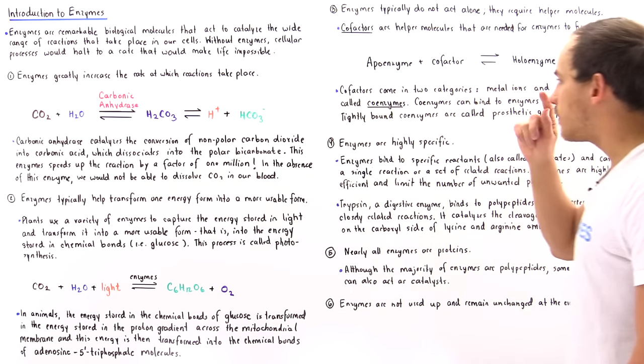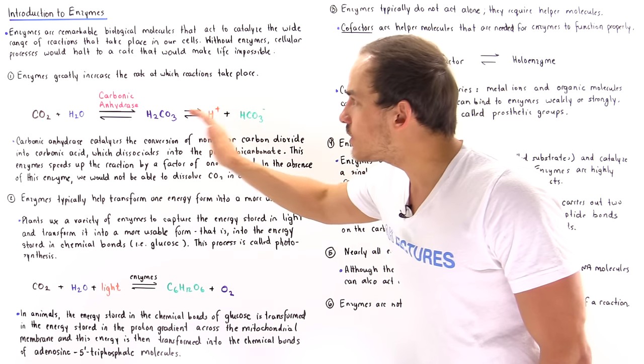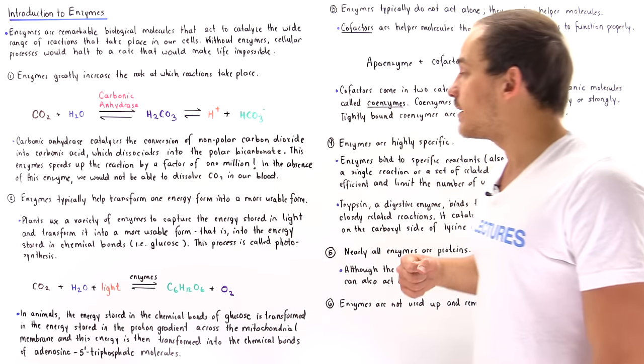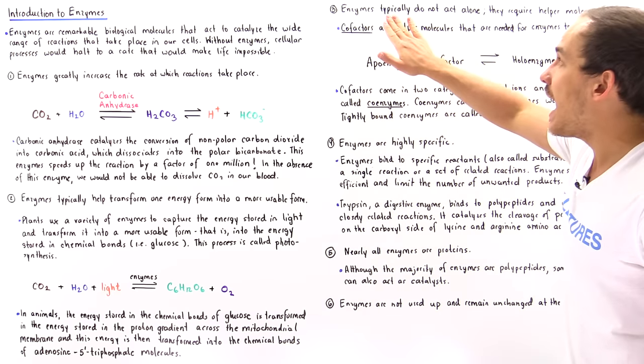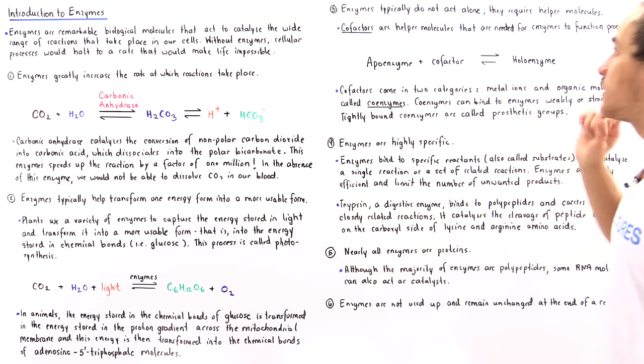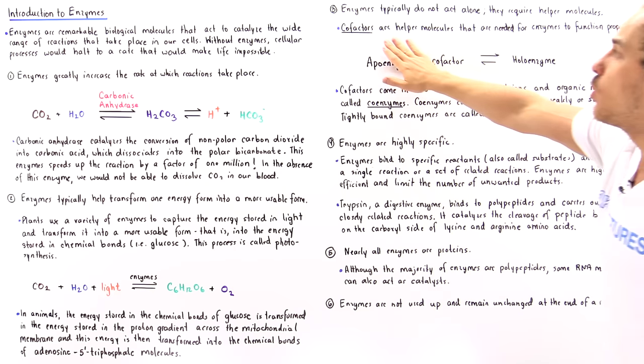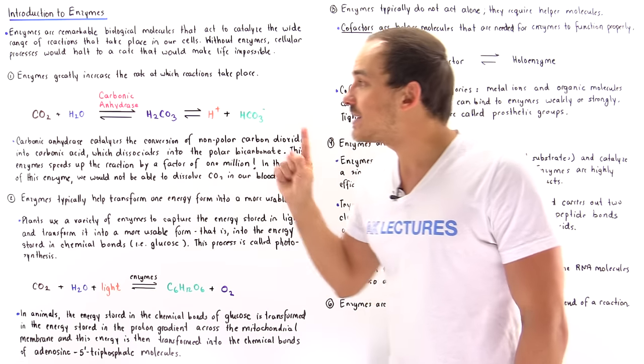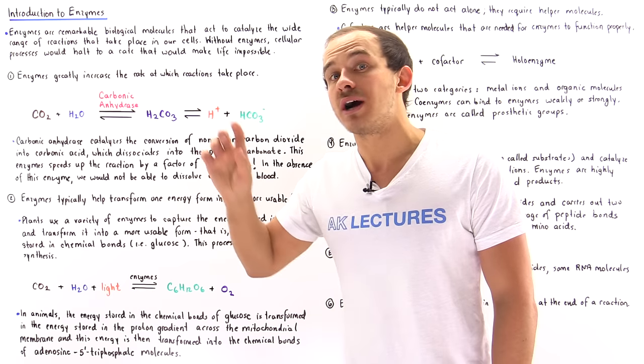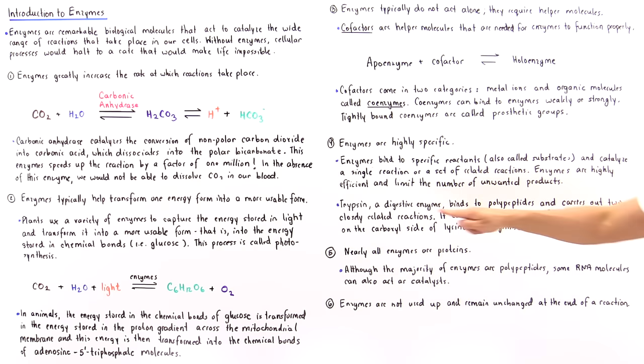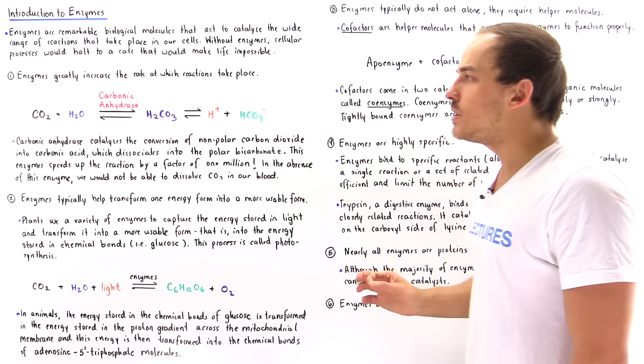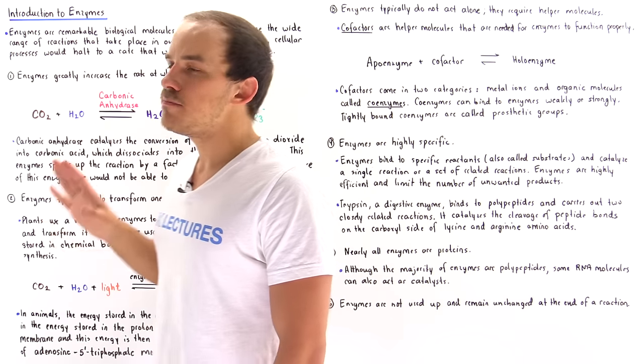So these are the six facts you have to remember about enzymes. Enzymes greatly increase the rate at which reactions take place. Enzymes typically help transform one form of energy into much more useful form of energy. Three, enzymes do not function alone and they typically need these helper molecules we call cofactors. Number four, enzymes are highly specific; they bind specific substrates and carry out only a single reaction or a set of similar reactions as we saw in the case of trypsin. Number five, nearly all enzymes are proteins, some enzymes are RNA molecules. And number six, enzymes are not depleted, they are not changed at the end of the reaction, they remain exactly the same.